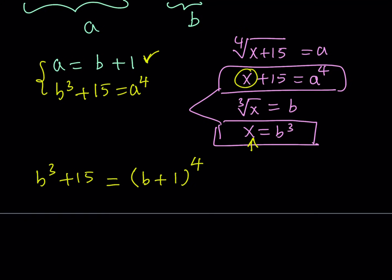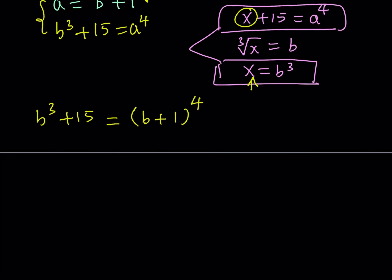Now, the right-hand side is binomial theorem. So, let's go ahead and expand it. Remember the Pascal's triangle, 4th row. The coefficients are 1, 4, 6, 4, 1.